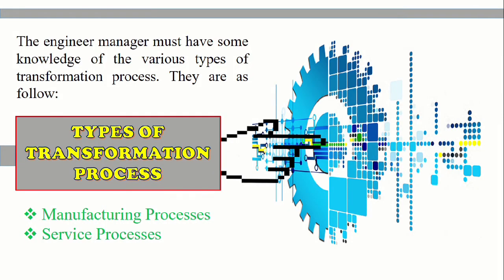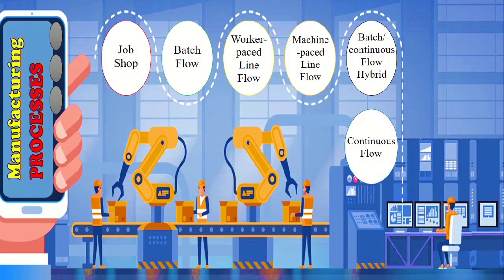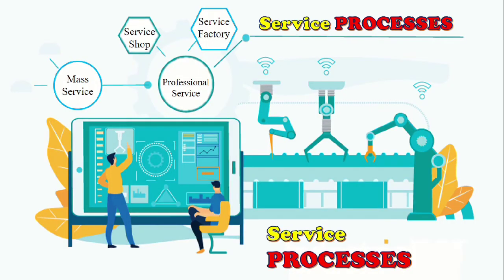Types of Transformation Process: The engineer manager must have some knowledge of the various types of transformation process. They are as follows: first are manufacturing processes, then service processes. Manufacturing processes include job shop, batch flow, worker-paced line flow, machine-paced line flow, batch or continuous flow hybrid, and continuous flow. Service processes include mass service, professional service, service factory, and service shop. The next reporter will discuss and explain further what these service and manufacturing processes are.